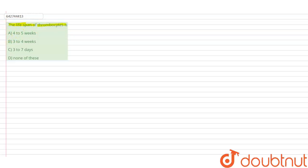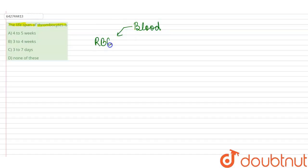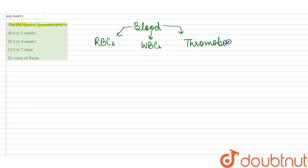The question is: what is the lifespan of thrombocytes? Firstly, what are thrombocytes? Thrombocytes are a component of our blood. Blood has three major components: red blood cells (RBCs), also called erythrocytes; white blood cells (WBCs); and thrombocytes, which are also called platelets.